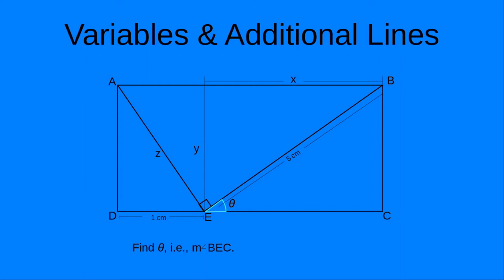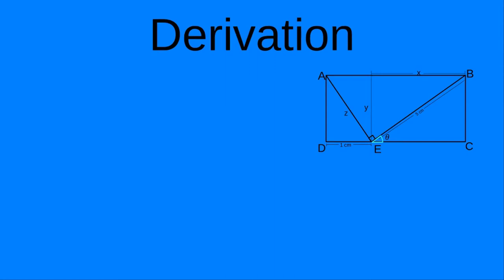Finally, Z. We know almost all of the lengths, or at least have representations for all the hypotenuses of these right triangles, except for the one on the left. That one I define as Z, so Z equals the length of segment AE. Now let's get to the derivation — this is where the fun part starts. Let's consider the left-hand triangle. It's a right triangle whose two legs are one and Y, and the hypotenuse is Z. From the Pythagorean theorem: one plus Y squared equals Z squared.